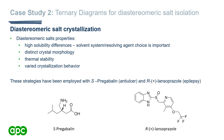A diastereomeric salt is synthesized by reacting a racemic acidic or basic compound with an enantiopure acidic or basic resolving agent. These can be separated by fractional crystallization, and once isolated the salts can be neutralized to give the pure enantiomer. As highlighted earlier, diastereomers and diastereomeric salts tend to have interesting properties that can be leveraged when designing a crystallization — including high solubility differences, distinct crystal morphology, varied thermal stability, and varied crystallization behavior.